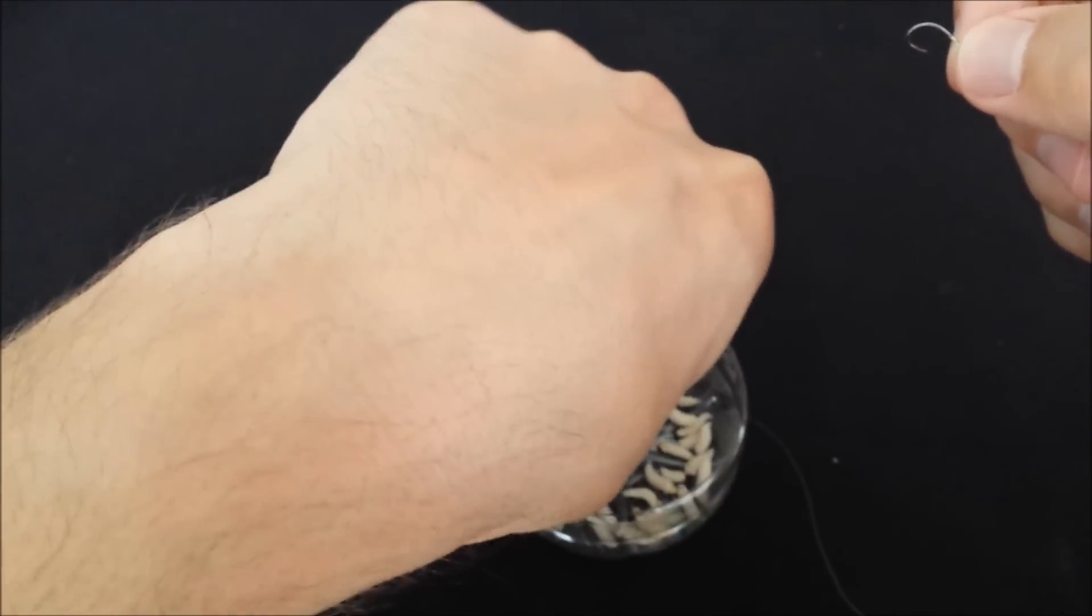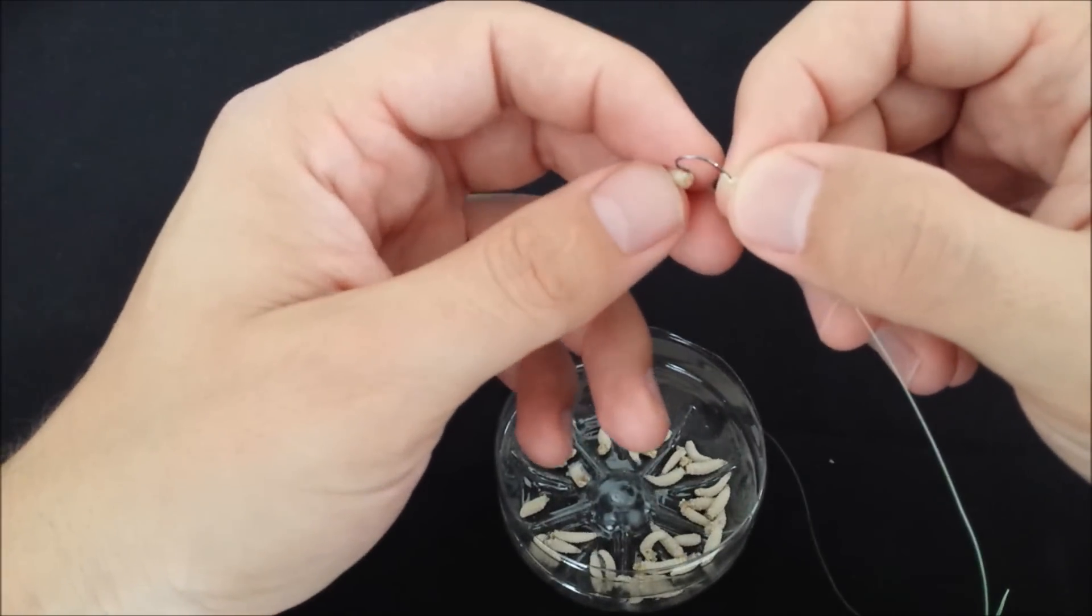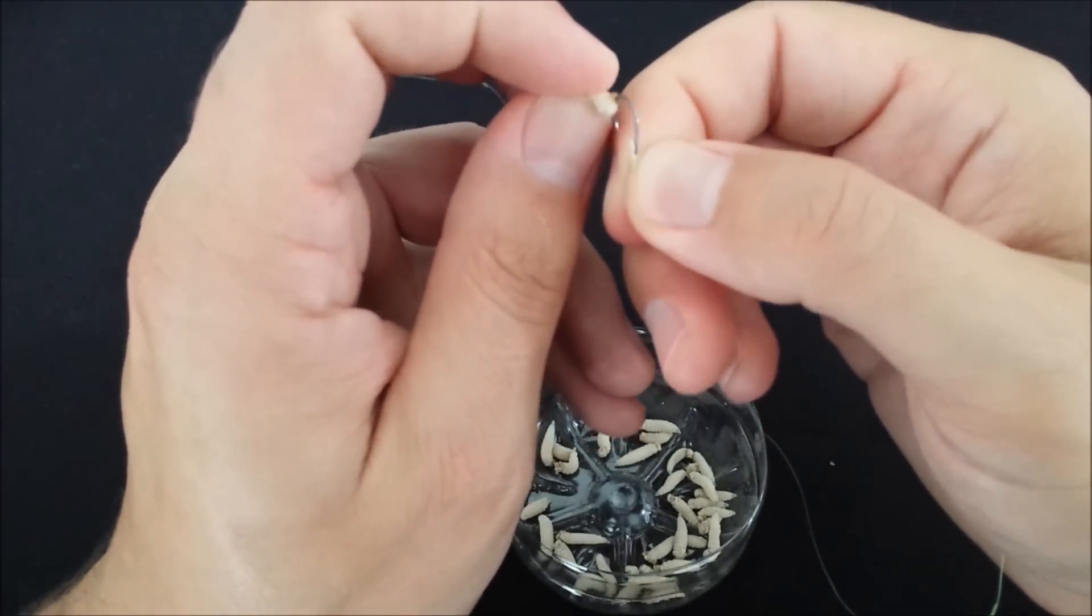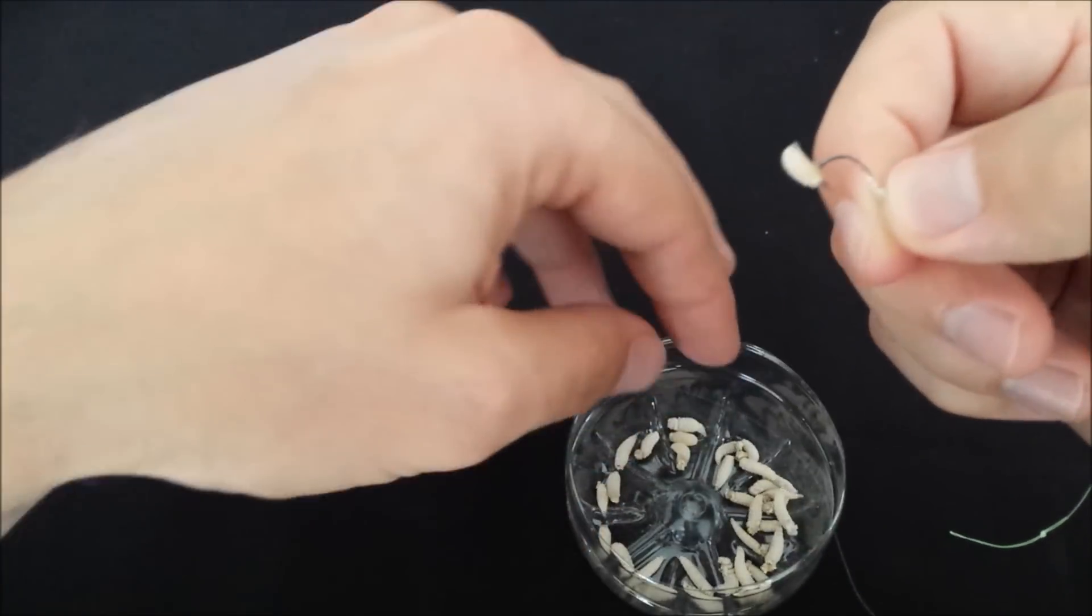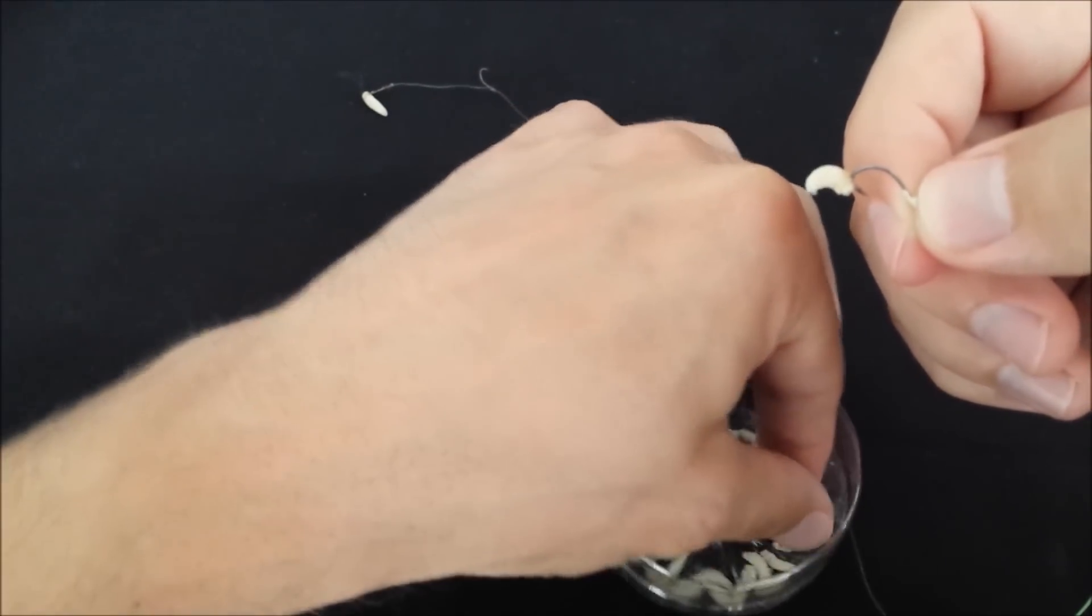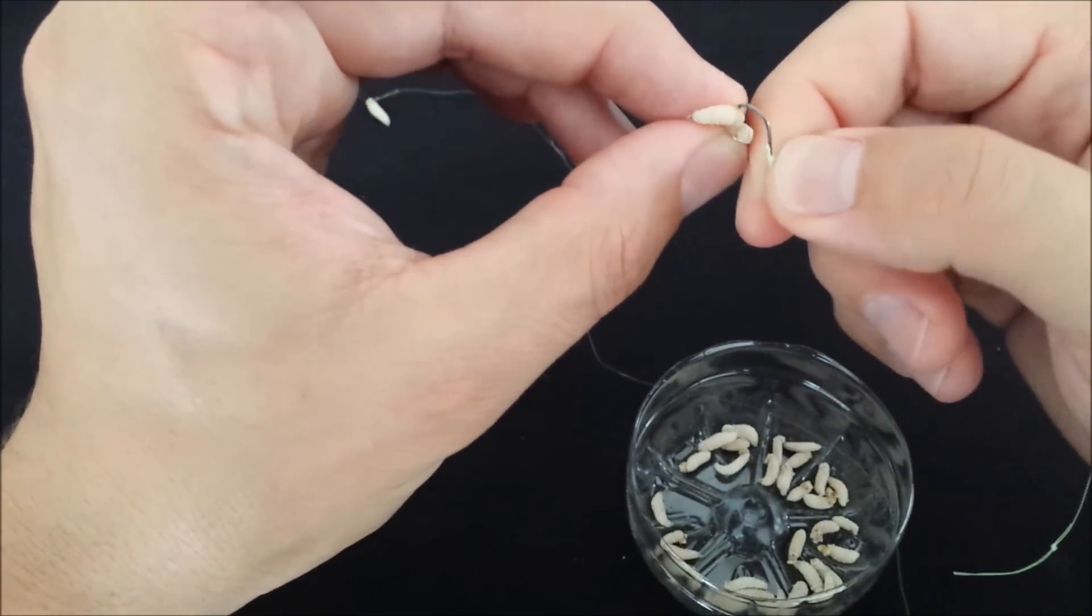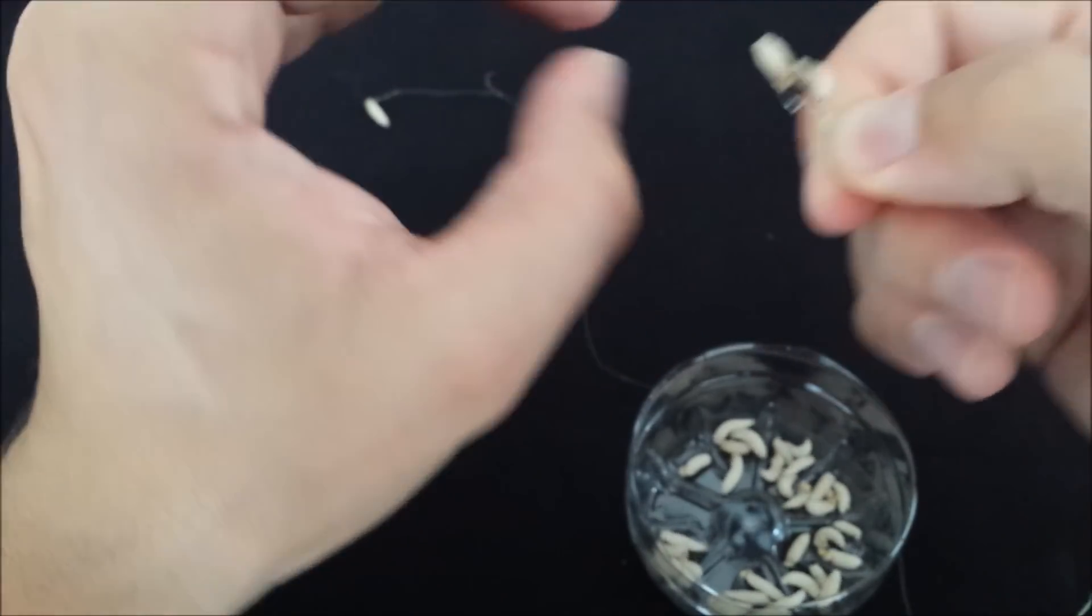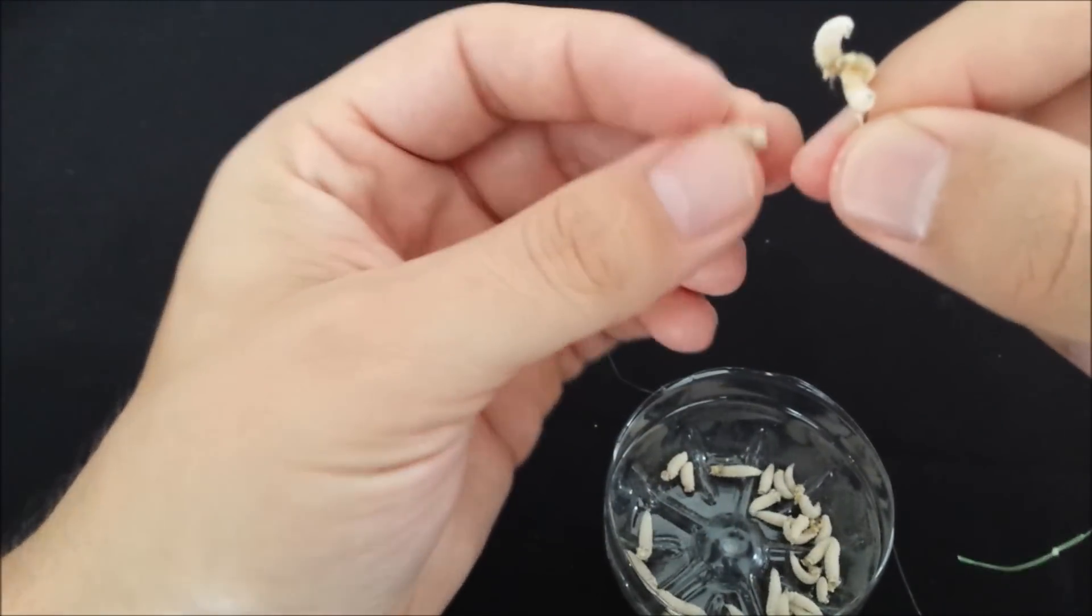When you want to catch carp, perch, catfish, or trout, you need to put more worms. The technique is the same - you're going through the bottom part of the worm, through the skin, which leaves your worm alive and very active. That's gonna attract fish.